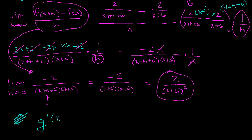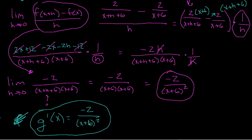So g prime of x — the derivative of this function g — is negative 2 over x plus 6 squared. What I just found is a formula for the slope of a tangent line at any given point on the function g. Stay tuned to the next couple of videos that will go over what to do with a derivative once you have it.